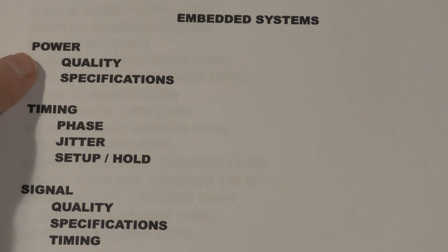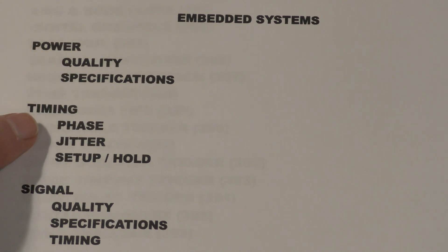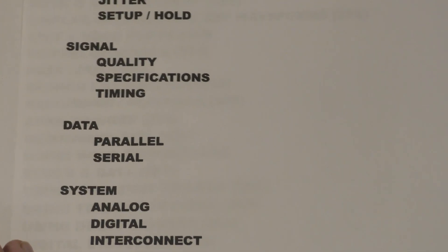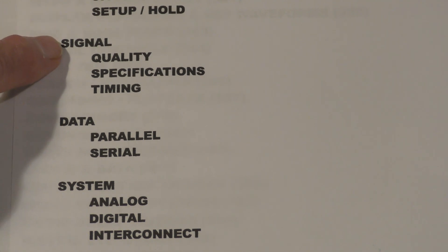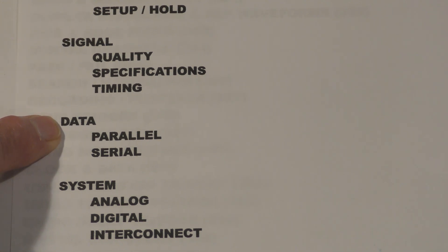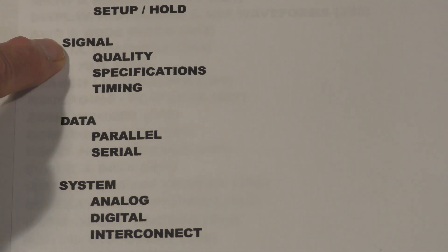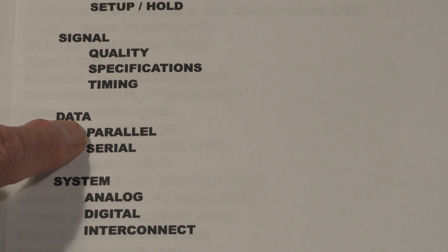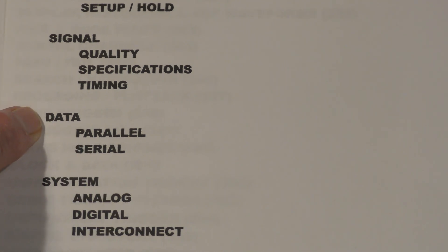I've always found it most useful to start with the power and verify the power, then to verify the timing. After that, to look at the signals, then to verify that the data you're getting is correct. The difference between signals and data is: signals have to do with the electrical characteristics, while data has to do with the information content. For example, a 5-volt TTL signal would fall in the signals category, but a group of TTL signals making up a parallel bus having an ASCII character on that bus I would call data.